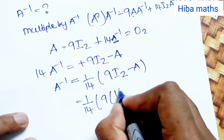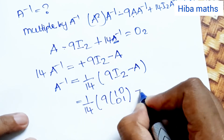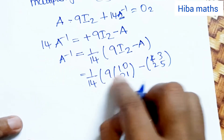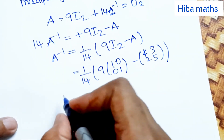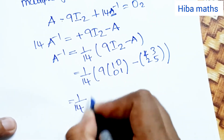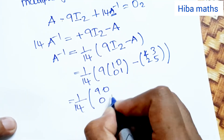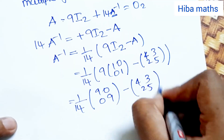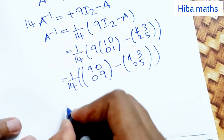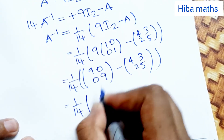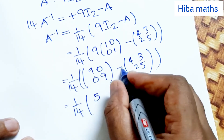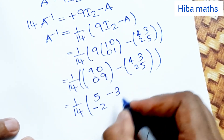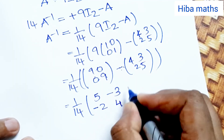Therefore A⁻¹ = (1/14)(9·I₂ − A). Substituting: (1/14) × [9,0;0,9] − [4,3;2,5] = (1/14) × [9−4, 0−3; 0−2, 9−5] = (1/14) × [5, −3; −2, 4]. This is our A inverse value.